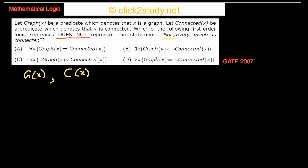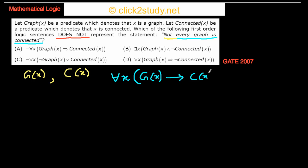First, let's consider how we'd write 'every graph is connected' without the 'not.' We'd write: for all X, G(x) implies C(x). That is, for all X, if X is a graph, then X is connected. Now, what we're supposed to do is negate this entire sentence.